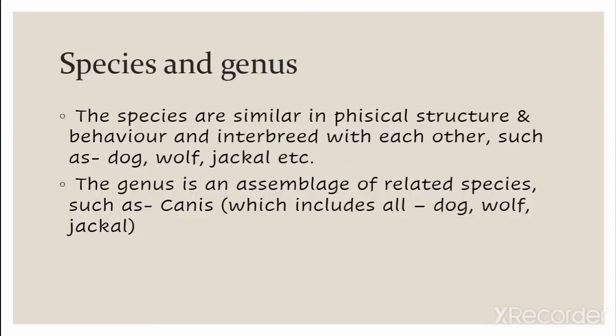Let's talk about the concepts of species and genus. Species are similar in physical structure and behavior, and they interbreed with each other — such as dog, wolf, and jackal. Any species interbreeds with its own kind: dogs with dogs, wolves with wolves, jackals with jackals. Humans are one species. Whether Americans, Chinese, or Indians — any race or ethnicity — we are all the same species and can interbreed with each other. We may have slight differences in physical structure and behavior, but we are the same species.